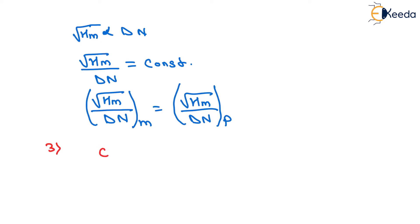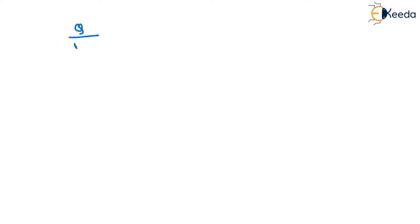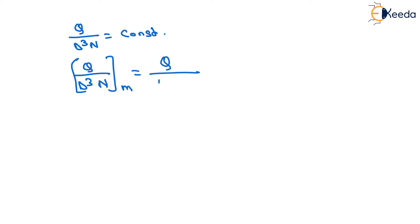The third condition involves flow rate Q. Q is directly proportional to D squared and also to Vf, so Q is proportional to D squared times Vf. Since Vf is proportional to u which is proportional to DN, we get Q proportional to D cubed times N. Therefore, Q upon D cubed N equals a constant, giving us: Q upon D³N of the model equals Q upon D³N of the prototype.